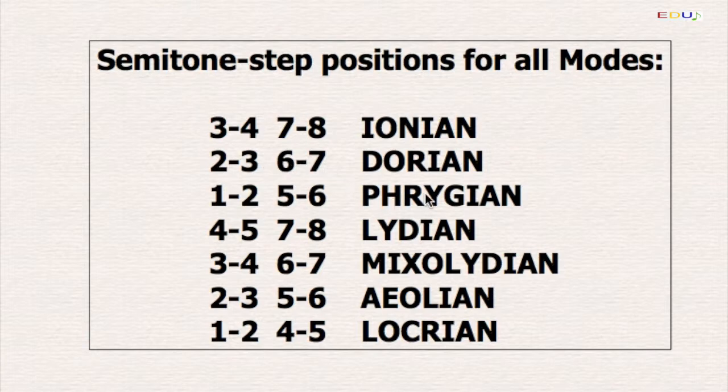For Phrygian, between 1 and 2 and 5 and 6. For Lydian, between 4 and 5 and 7 and 8. For Mixolydian, between 3 and 4 and 6 and 7. For Aeolian or natural minor, between 2 and 3 and 5 and 6. And for Locrian, between 1 and 2 and 4 and 5.